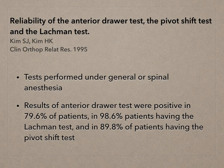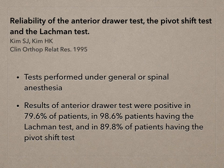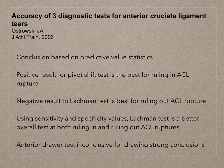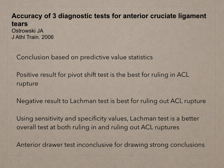A paper published by Kim on the reliability of the anterior drawer test, the pivot shift test, and the Lachman test showed that tests were performed under general or spinal anesthesia. The results of the anterior drawer test were positive in 79.6% of patients, 98.6% for the Lachman test, and 89.8% for the pivot shift test. A study by Otrovsky assessed the accuracy of the three diagnostic tests, and the conclusion based on predictive value statistics was that a positive result for the pivot shift test is the best for ruling in ACL rupture.